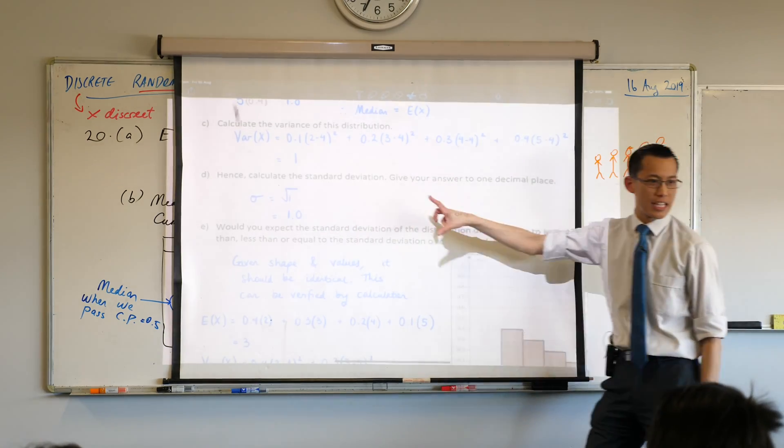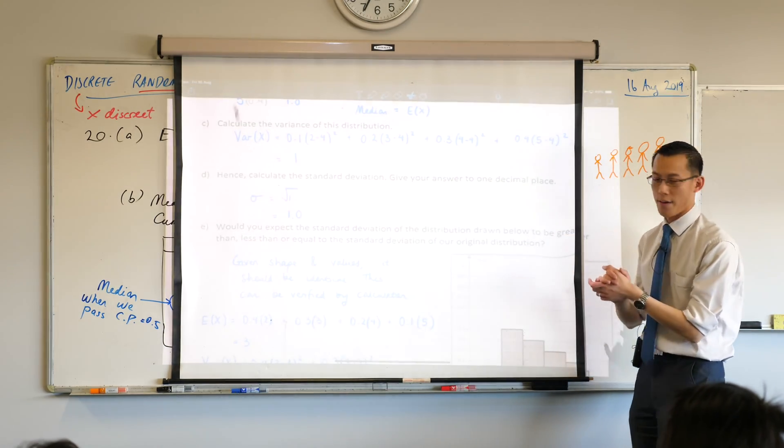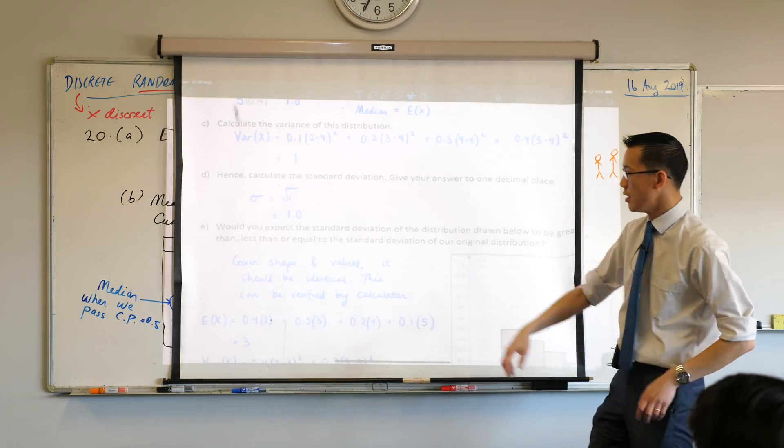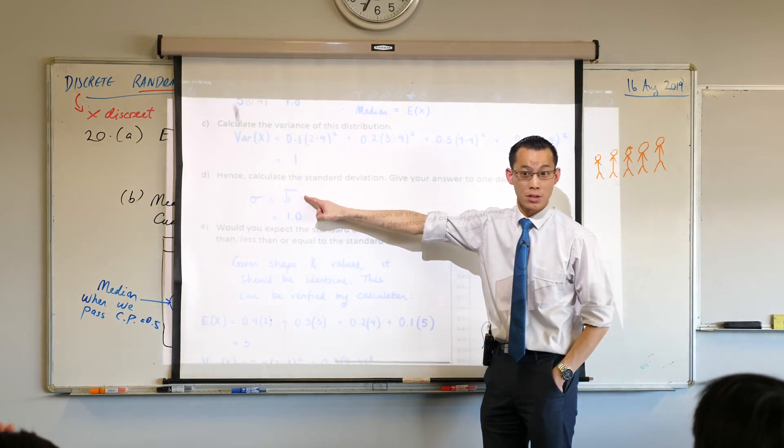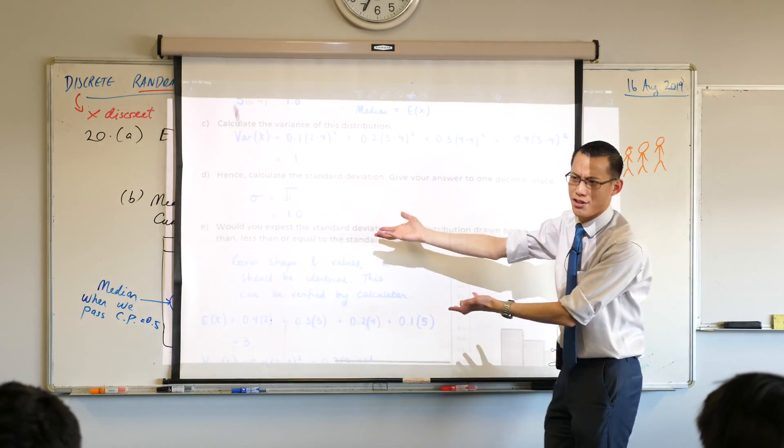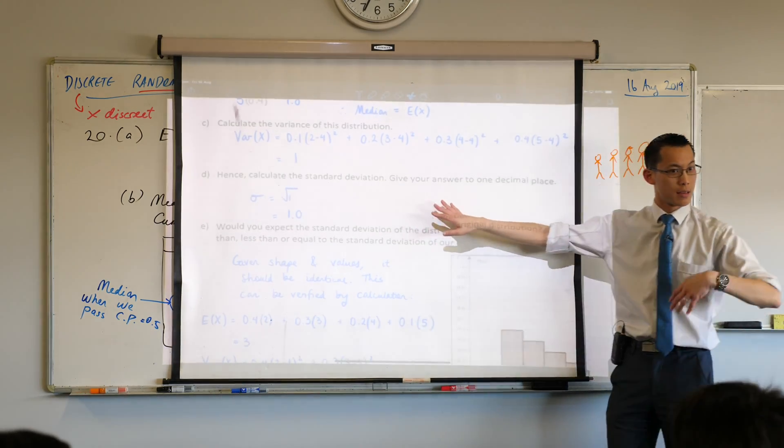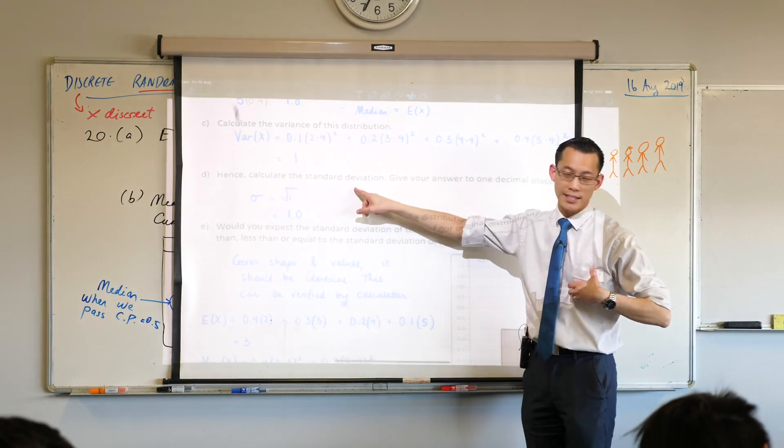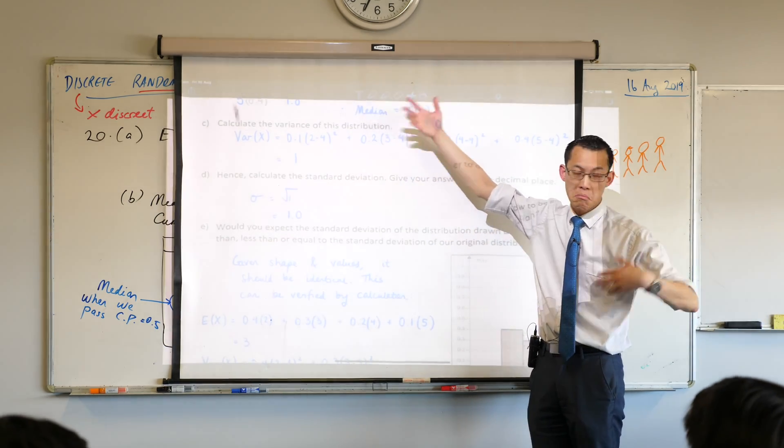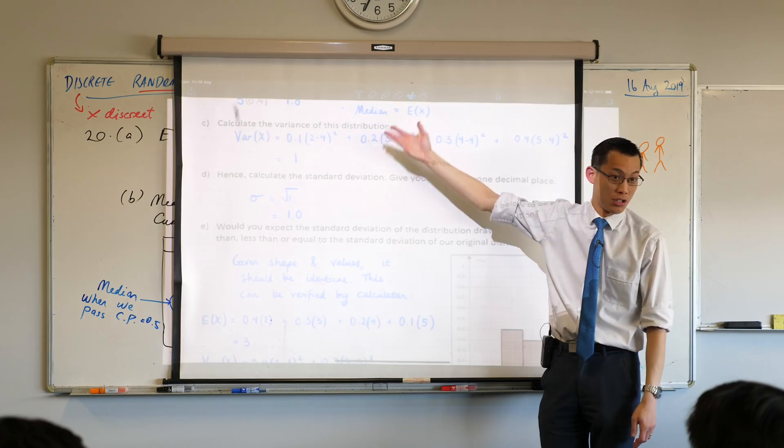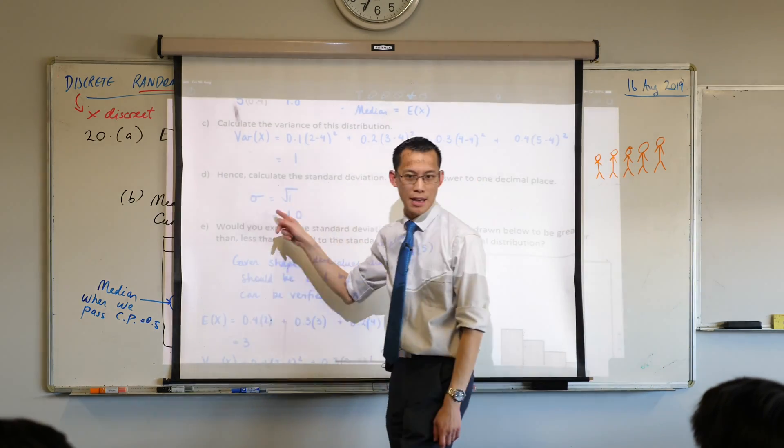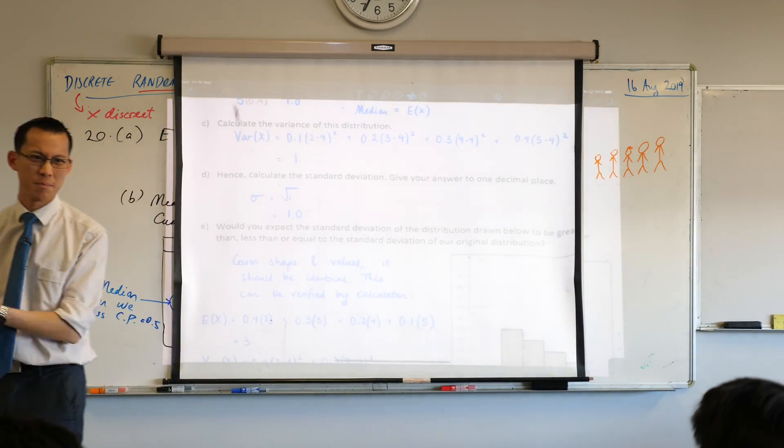When you do this standard deviation, this is something a lot of you I've seen, you just kind of go straight to the answer. Please actually tell me what you're doing. It seems immaterial. You're like, the square root of one is one, dude. I don't need to write that, do I? I want to see as a marker that you know how to get standard deviation from variance. Most of the time, it won't be equal to just one. So actually put that step in there, please. Don't skip it. It doesn't take you long anyway.